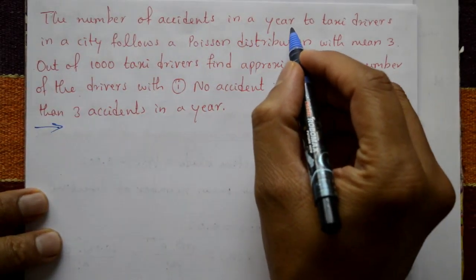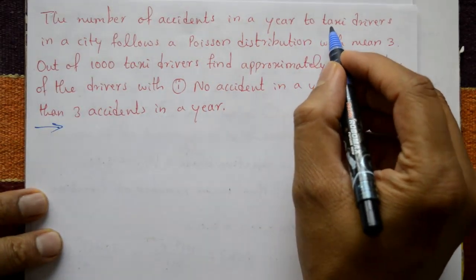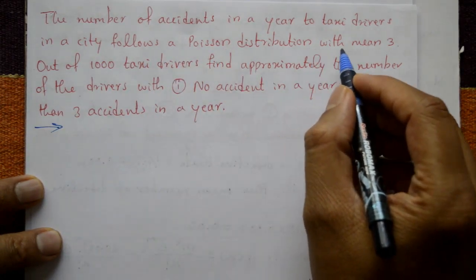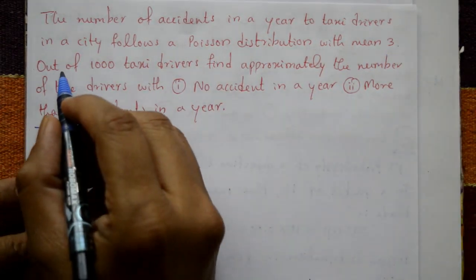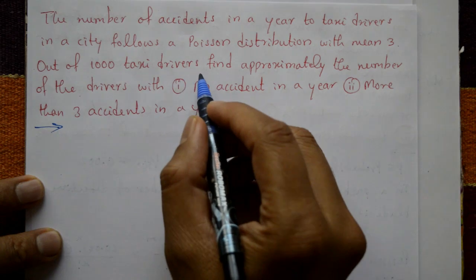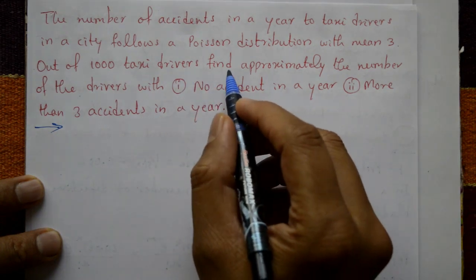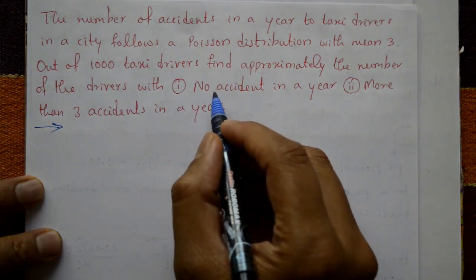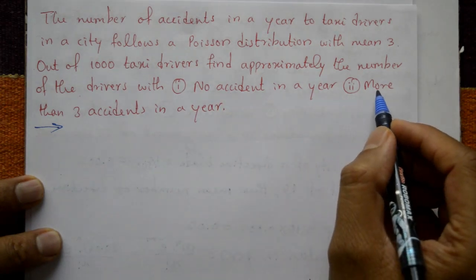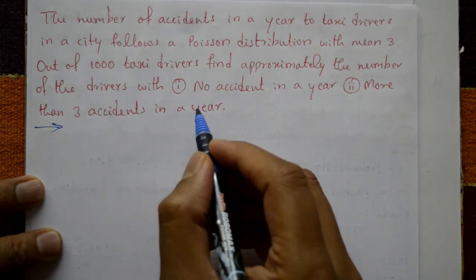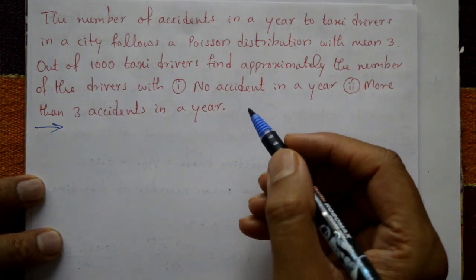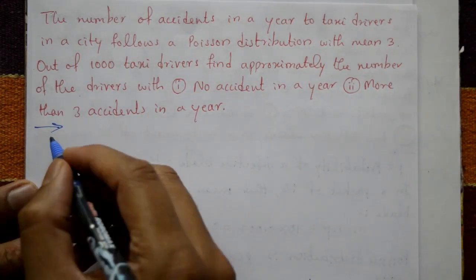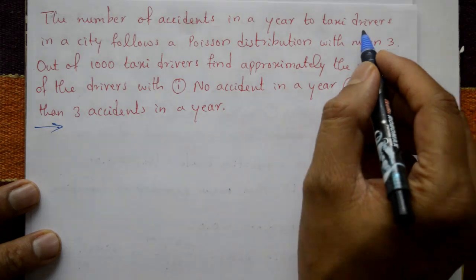The number of accidents in a year to taxi drivers in a city follows a Poisson distribution with mean three. Out of one thousand taxi drivers, find approximately the number of drivers with no accident in a year. The second part asks for more than three accidents in a year.